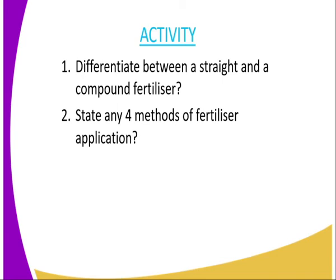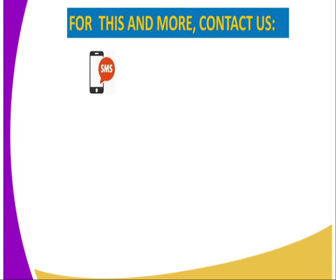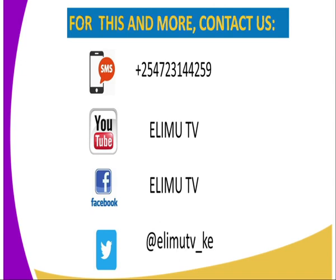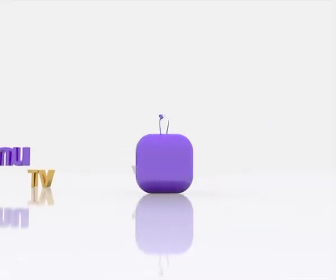That is the end of today's lesson. Here is an assignment: question one — differentiate between a straight and a compound fertilizer; question two — state any four methods of fertilizer application. For reference, you can refer to the secondary agriculture student book published by the Kenya Literature Bureau. For more information or clarification, you can reach us through SMS at the number displayed, YouTube at Elimu TV, Facebook at Elimu TV, and Twitter at Elimu underscore KE. Thank you for watching and for joining me in this lesson.